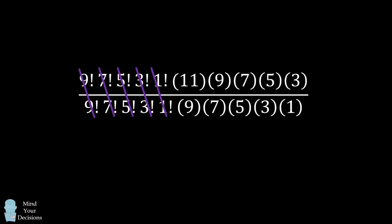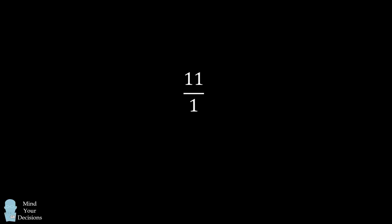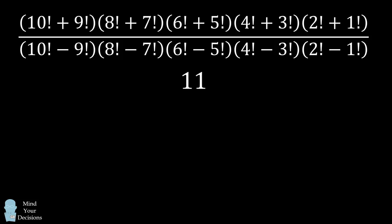For the product of the odd numbers, we have almost all of them canceling out, except we have one odd number of 11 remaining in the numerator and the odd number of 1 remaining in the denominator. So this all simplifies to be exactly 11.